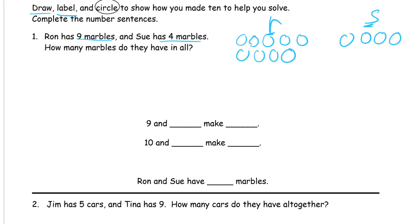And we're going to circle to show how we make ten. So Ron's nine is just missing one more to make ten. So I'm going to just loop this guy in here, and there's my ten. So that's Ron's nine and this one here make ten, and that leaves three more from Sue. So that's ten and three more make 13. Ron and Sue have 13 marbles. That's what we're doing.